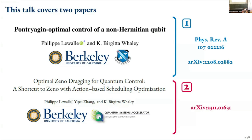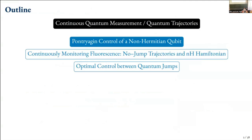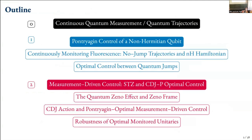Let me first start with the non-Hermitian qubit systems. This will be the outline of the talk. The first part covers continuous quantum measurements and quantum trajectories — specifically no-jump trajectories to monitor a non-Hermitian Hamiltonian, and optimal control between the quantum jumps. In the second half, I'll talk about measurement-driven control. STZ is shortcut to Zeno, a term we adapted from shortcuts to adiabaticity in the unitary control literature, and we use a Pontryagin-type formulation to optimize this measurement-driven control.